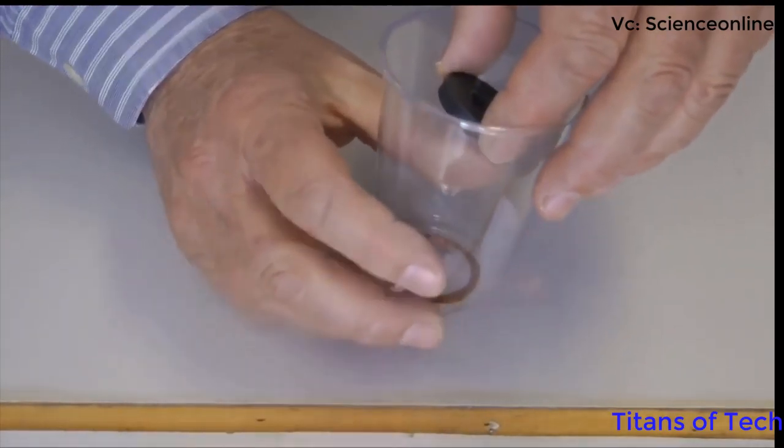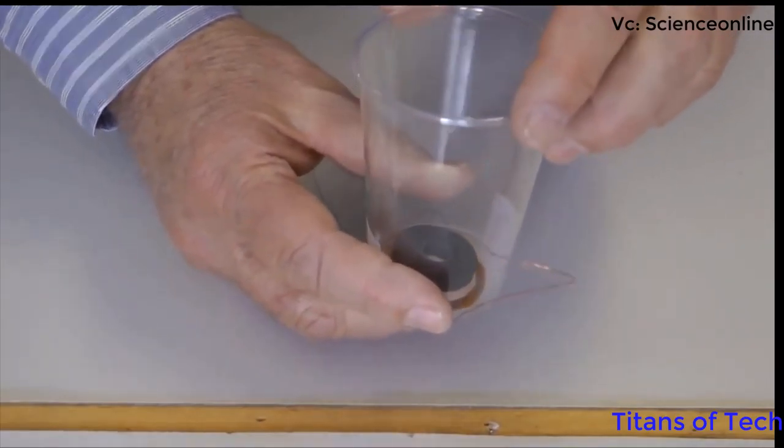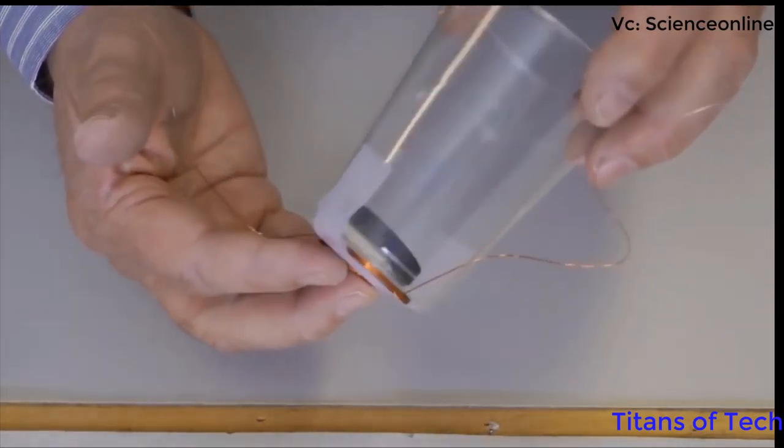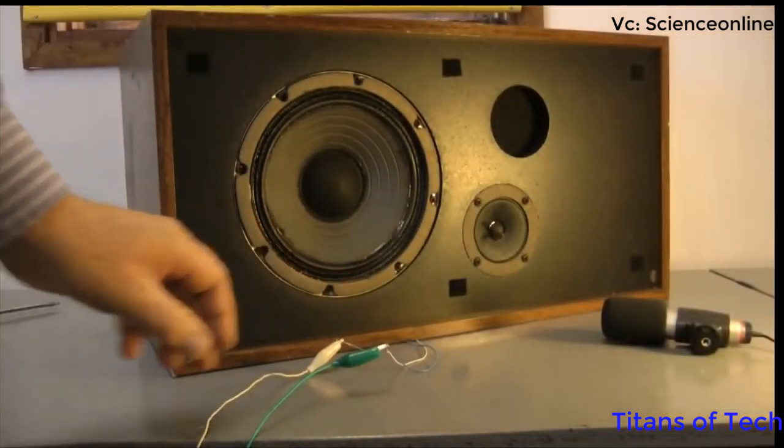I taped the coil to the bottom of a plastic cup. Any magnet will do for the permanent magnet. I'm using a disc ceramic magnet. A piece of rolled tape keeps it attached to the bottom of the cup.